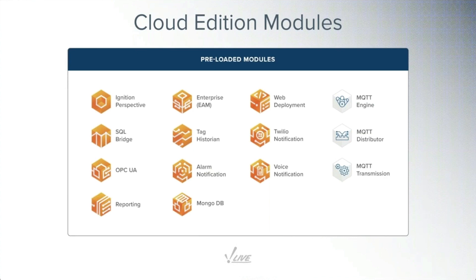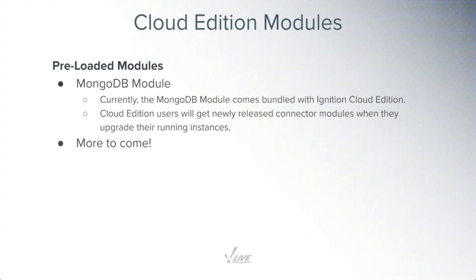All three MQTT modules from Cirrus Link are also included: Engine, Distributor, and Transmission. The MongoDB module is part of this as well. None of these cloud edition modules are exclusive to Cloud Edition — anything we create as a module for Cloud Edition we'll also make available for standard Ignition. The MongoDB module is already on our pricing page and can be purchased for standard edition Ignition as well.